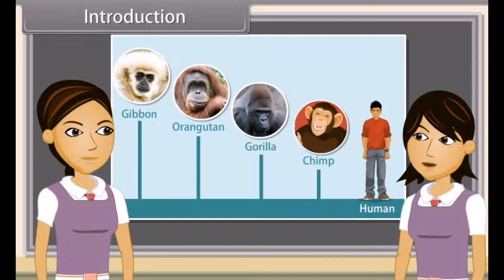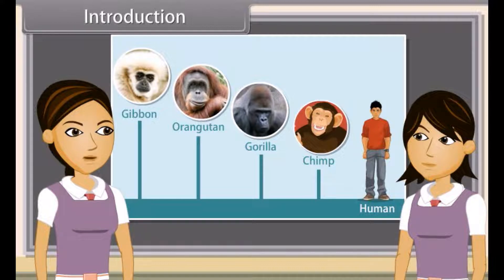Do you want to say that this chart shows that human beings had chimpanzees as their ancestors, chimpanzees' ancestors were gorillas and so on? Yes, let me explain to you in detail how various life forms were evolved on the earth, one after the other.